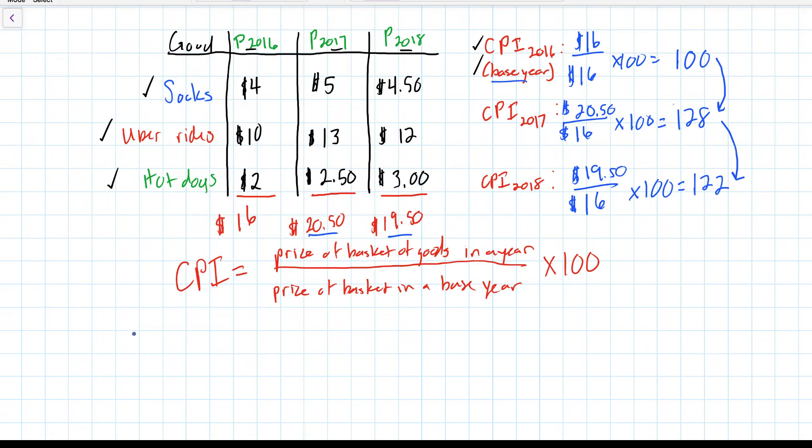In the last video, we talked about how to calculate the consumer price index using the prices of particular goods consumed by a typical consumer in a nation in a year. In this video, we're going to use the CPI to calculate inflation between different years.